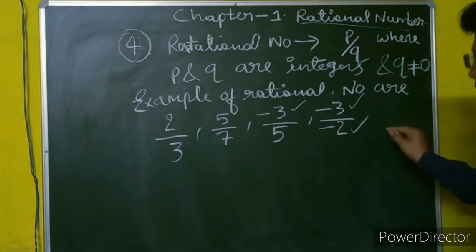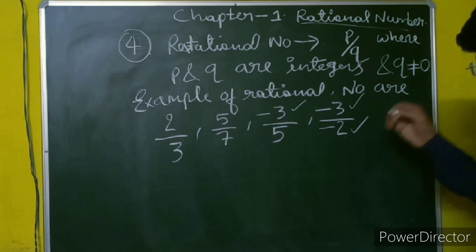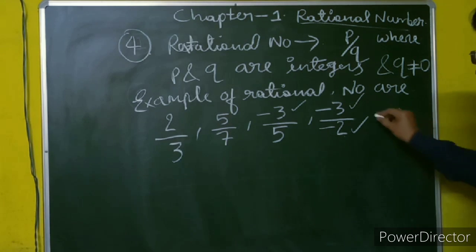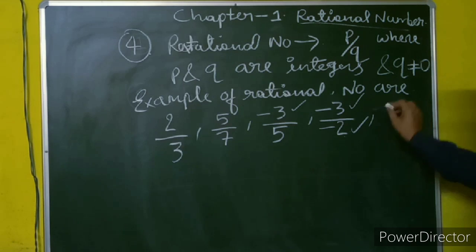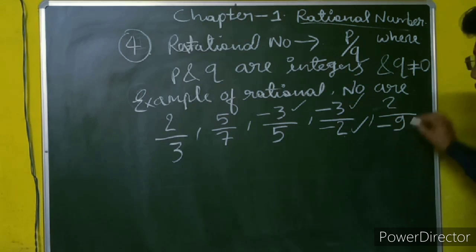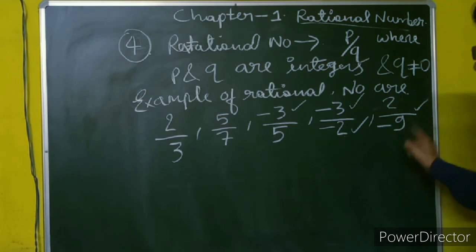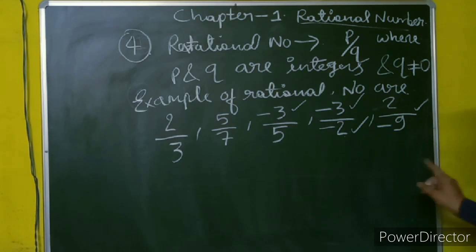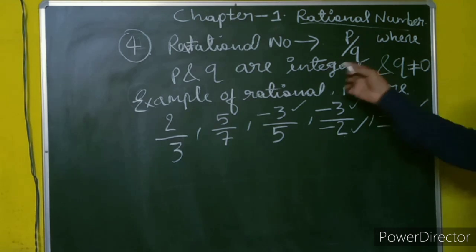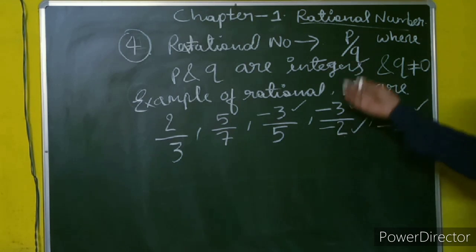One more example: minus 2 upon 9 is also a rational number. And minus 2 upon minus 9 is also a rational number. 2 upon minus 9 is also a rational number. We are waiting for some time so you can write these in your copy.